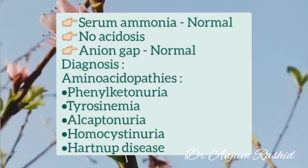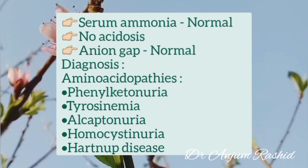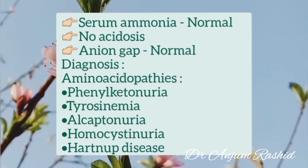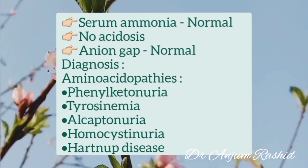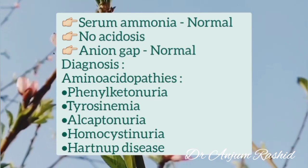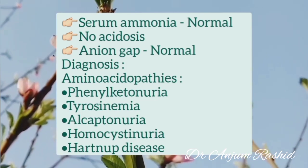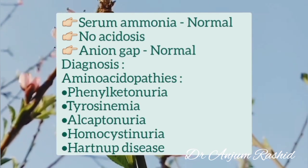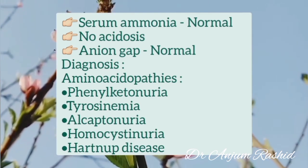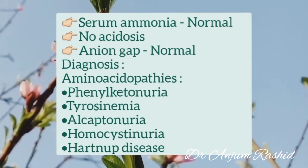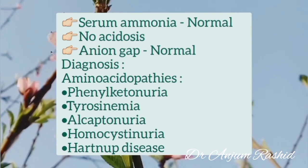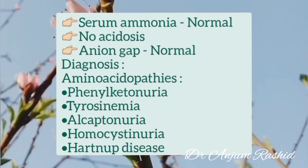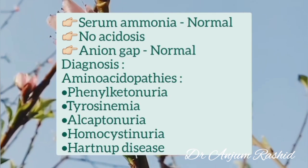If the serum ammonia is normal, there is no acidosis, and the anion gap is also normal, then the initial symptoms in the baby could be due to amino acidopathies. Five differential diagnoses are included: phenylketonuria, tyrosinemia, alkaptonuria, homocystinuria, and Hartnup disease.